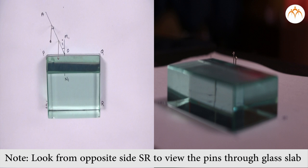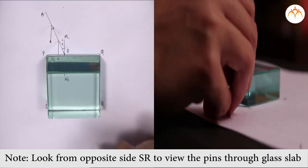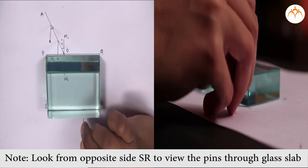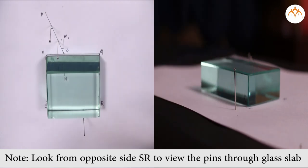We can see the pins 1 and 2 through the glass slab. They are linear. Now we fix a third pin on the side of SR in such a way that pins 1 and 2 appear to be collinear.